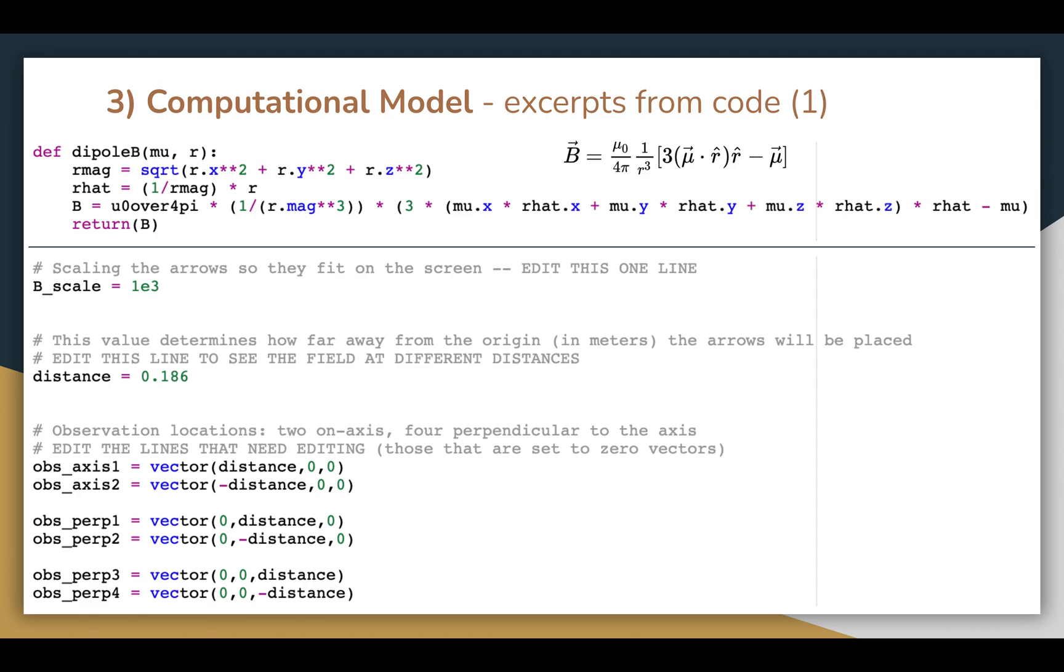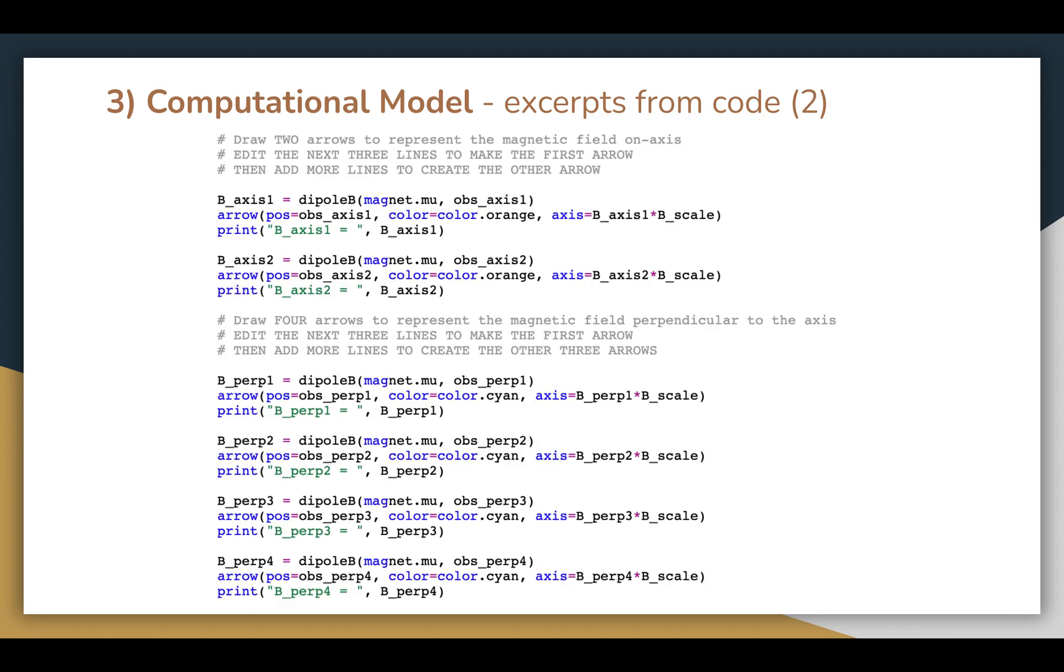I then set the locations for six of the seven points where I'd be visualizing the magnetic field. Two of these points are on the dipole axis while the other four are perpendicular to the dipole axis. After that, I drew arrows for each of those six points as shown in the code here.